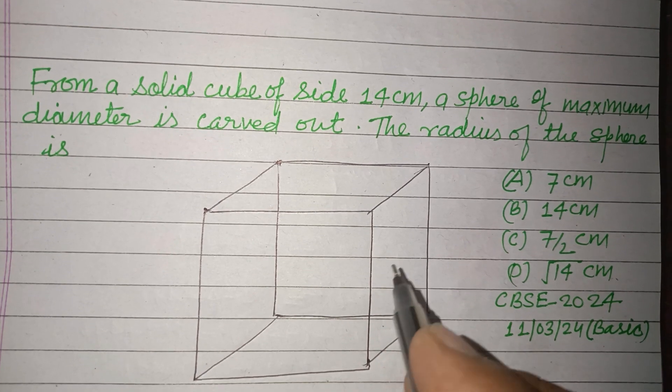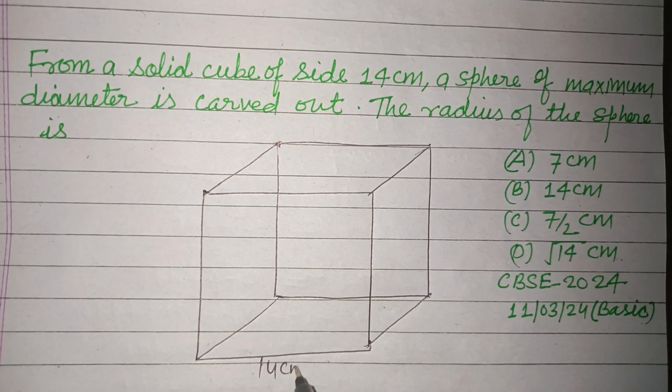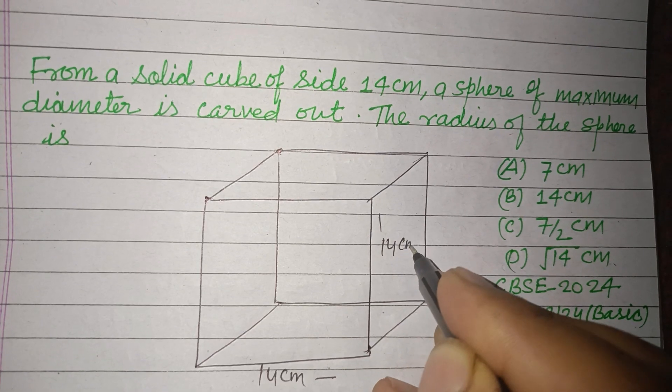And the side of the cube is given to us as 14 cm, because all sides of a cube are the same.